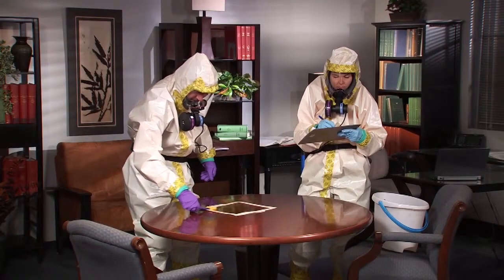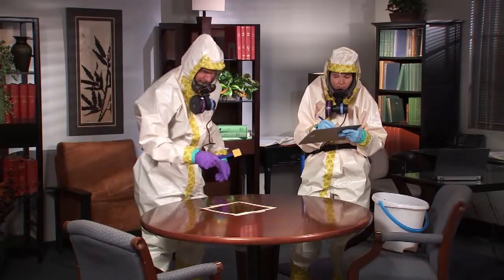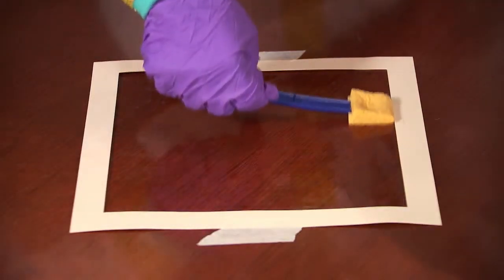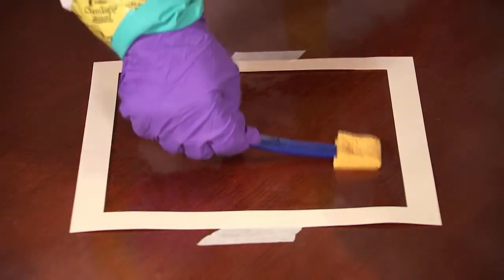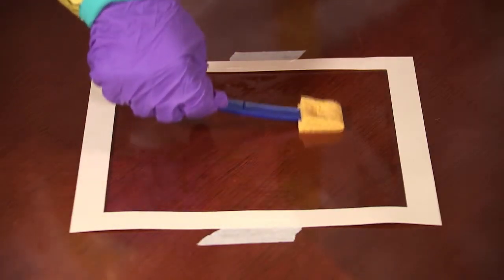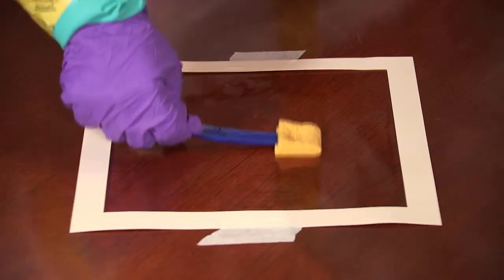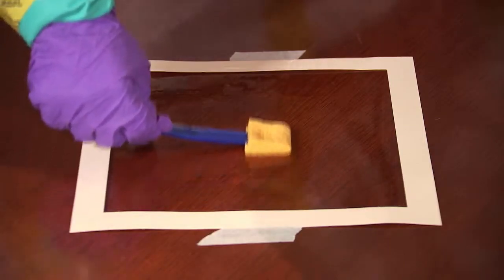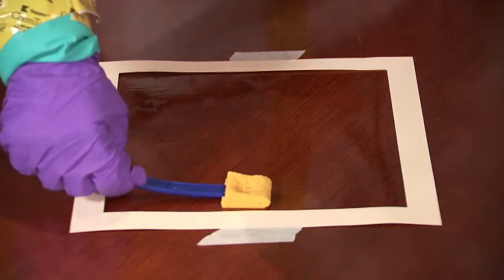In the second pass, the sampler turns over the sponge to the clean side, places the side of the sponge on the surface, and covers the area with vertical S strokes. These strokes are at a 90 degree angle to the first ones.